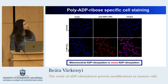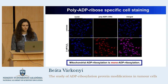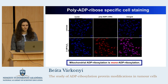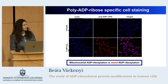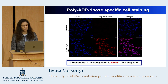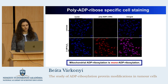We also stained untreated and hydrogen peroxide-treated cells with a poly-ADP ribose-specific antibody. The absence of staining in untreated cells and the control stain in the treated cells led us to the conclusion that mitochondrial ADP ribosylation is mono-ADP ribosylation, which means that there is only one unit of ADP ribose binding to the proteins.